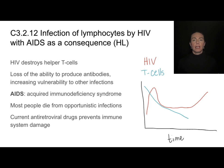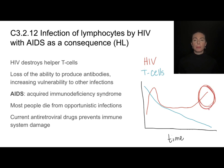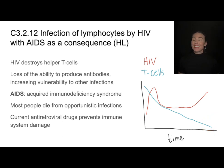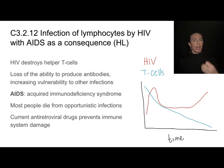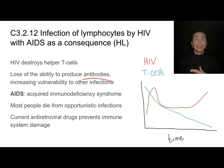The T cell count is going to go very low. Eventually, we have so many HIV viruses in the bloodstream that they completely destroy all of the T cells. What do T cells do? They activate B cells. So if you don't have T cells and you can't activate B cells, you cannot produce antibodies to any infection.